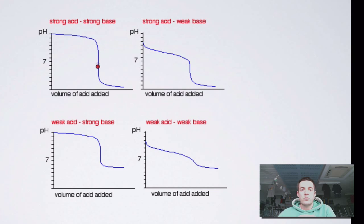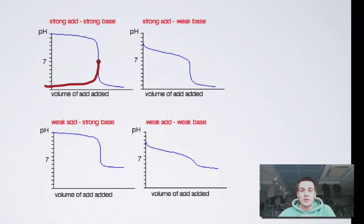The equivalence point is the point or the volume at which we've reached an equivalent amount of acid and base. In other words, if we're adding our acid to the base, we've added just enough acid to neutralise the base. This curve could equally well be going the other way — we could be starting with our strong acid and adding a strong base — and this is the volume at which we've added just enough strong base to neutralise the acid.